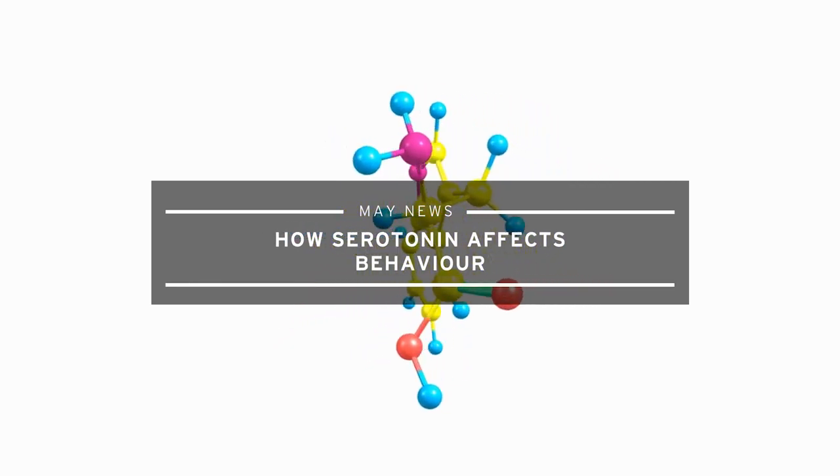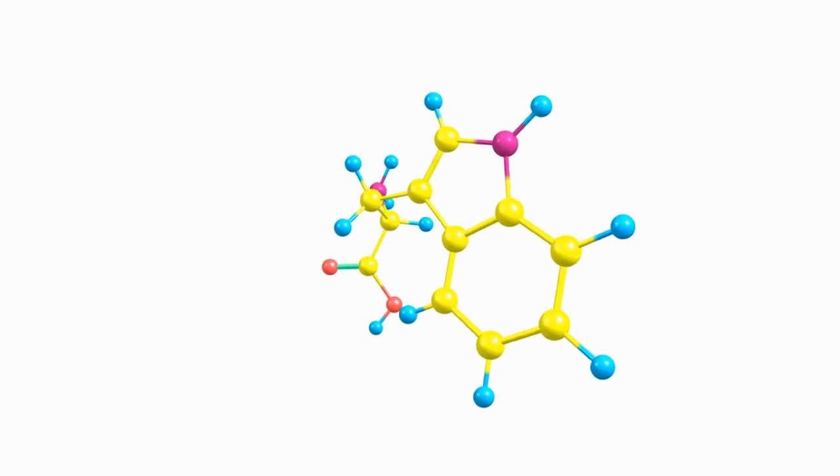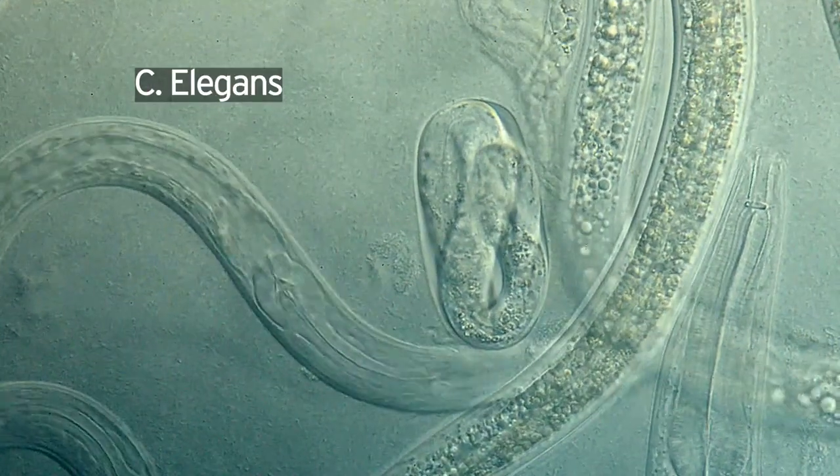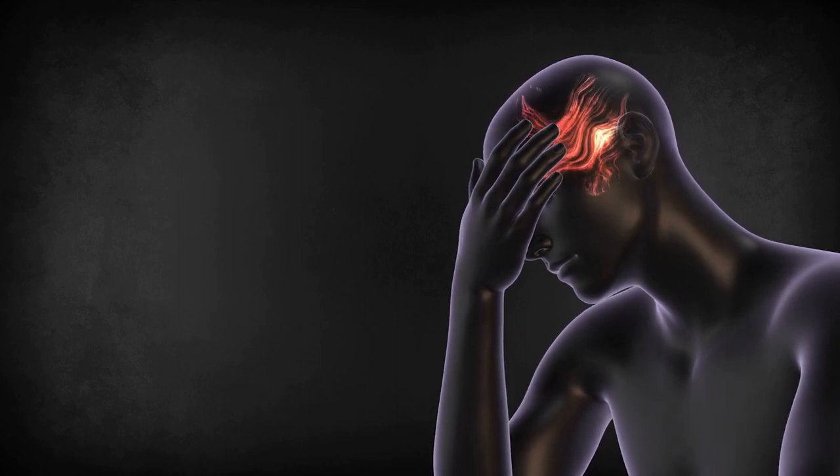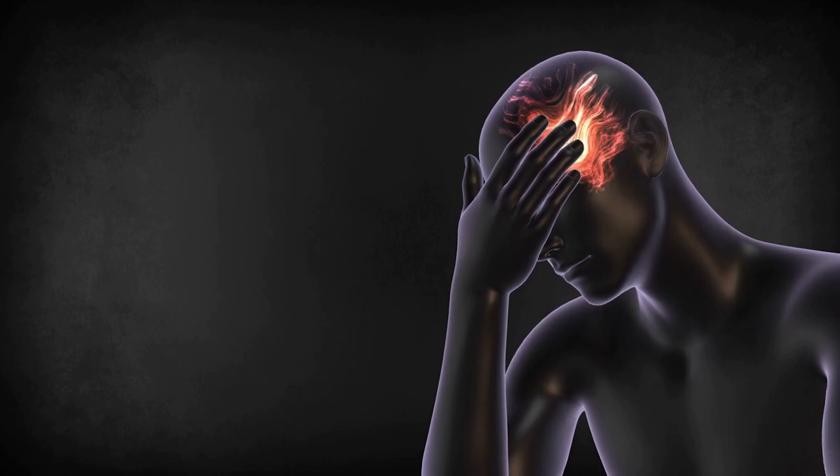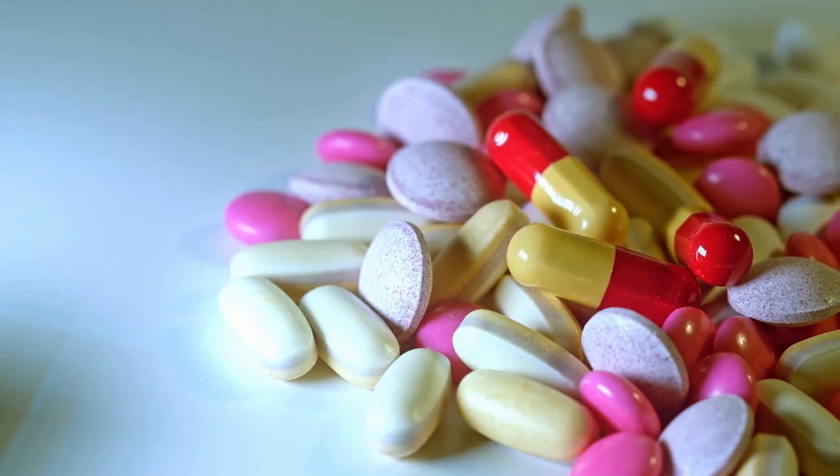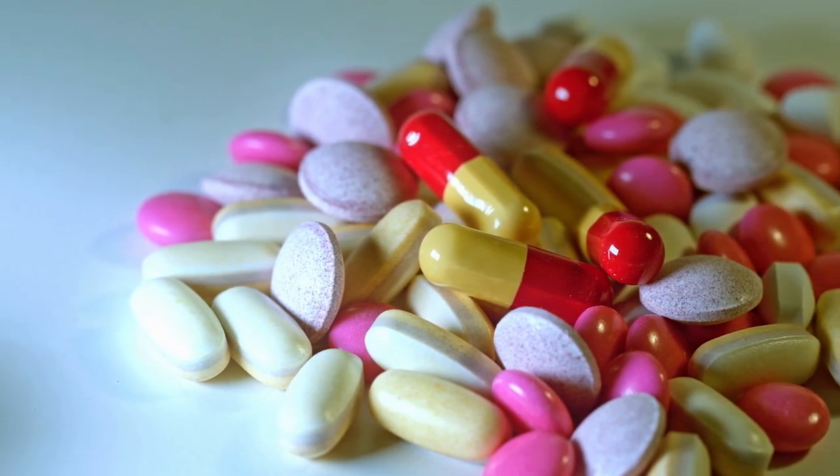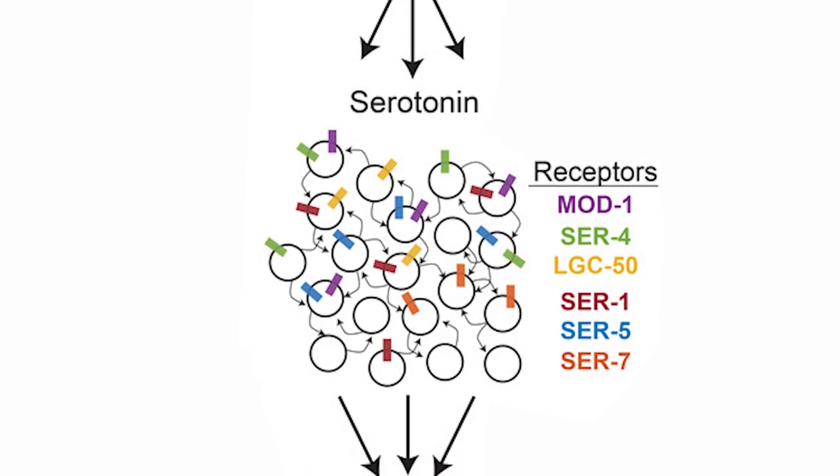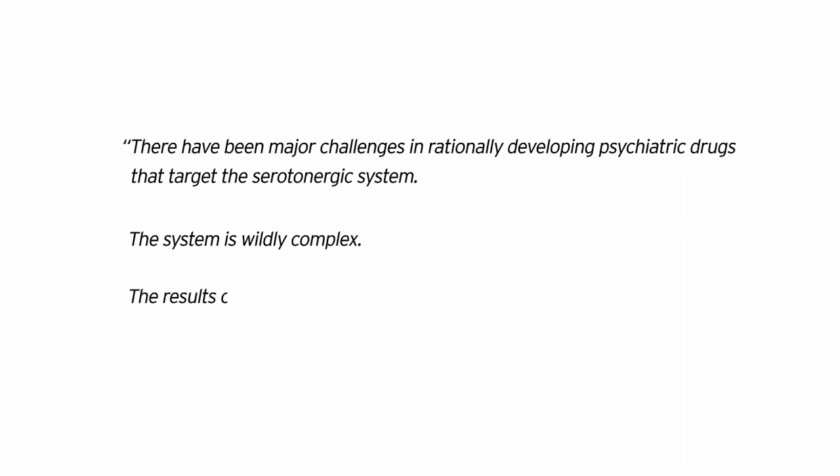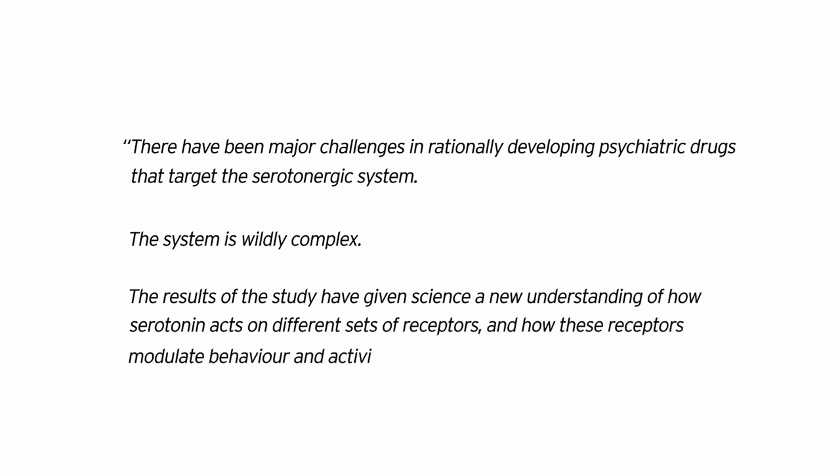New research from MIT has shown how serotonin affects behavior from individual molecules to the entire brain using C. elegans, a tiny non-parasitic nematode worm. Serotonin is a chemical in the brain which influences mood and it's been a common target for medicines that look to reduce or eliminate depressive symptoms and other symptoms related to psychiatric disorders. There has been substantial research into developing medications that affect serotonin levels. However, our understanding of how serotonin affects behavior has remained incomplete until now. Steve Flavel, senior author of the study, says there have been major challenges in rationally developing psychiatric drugs that target the serotonergic system. The system is wildly complex. The results of the study have given science a new understanding of how serotonin acts on different sets of receptors and how these receptors modulate behavior and activity across the brain.